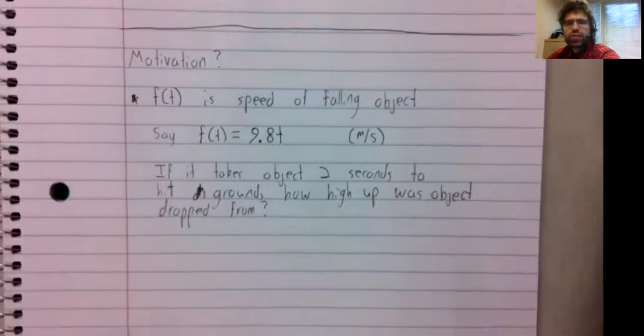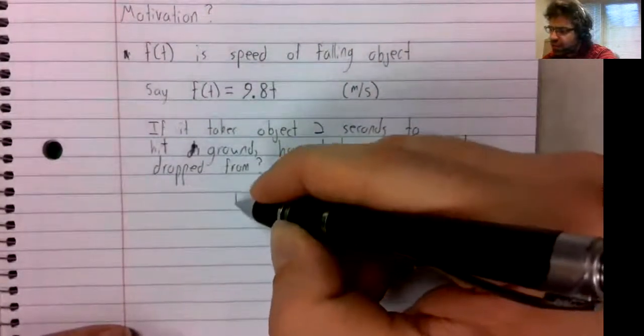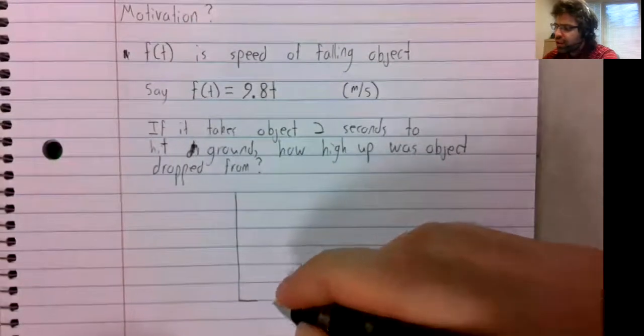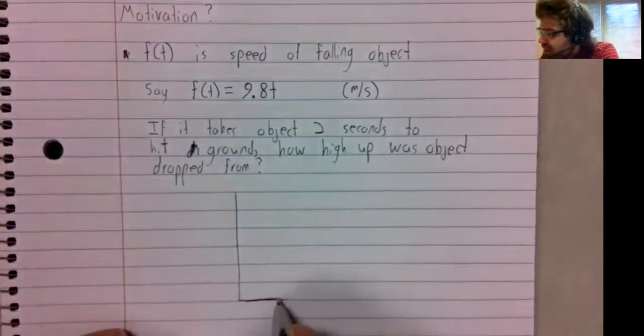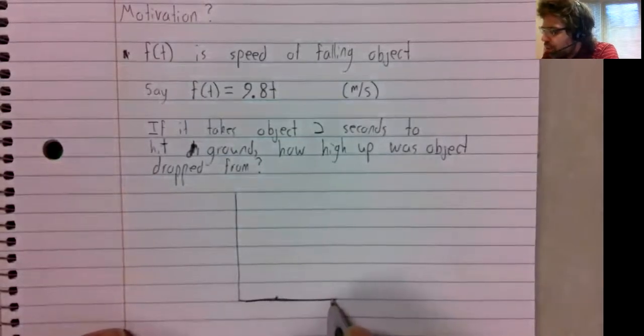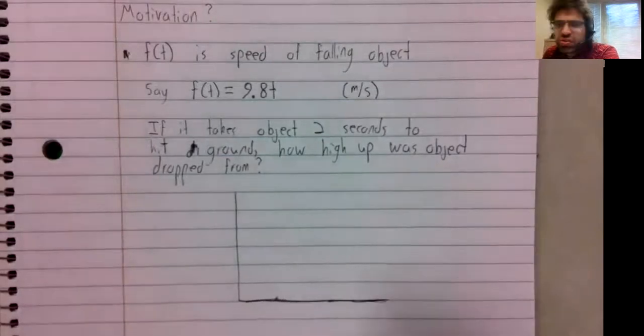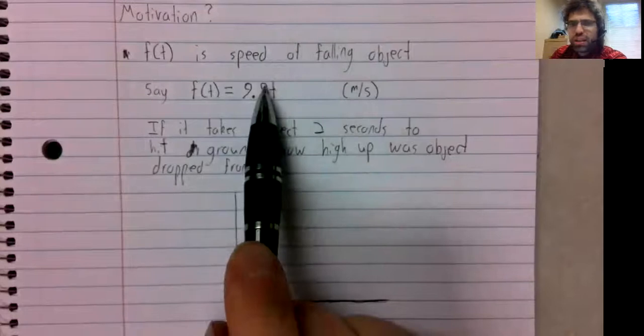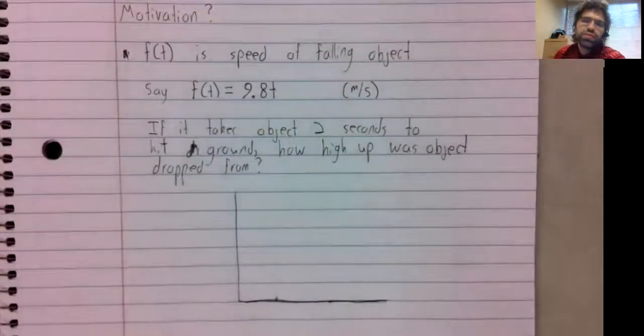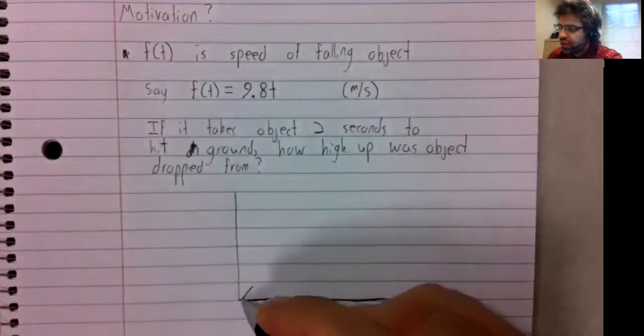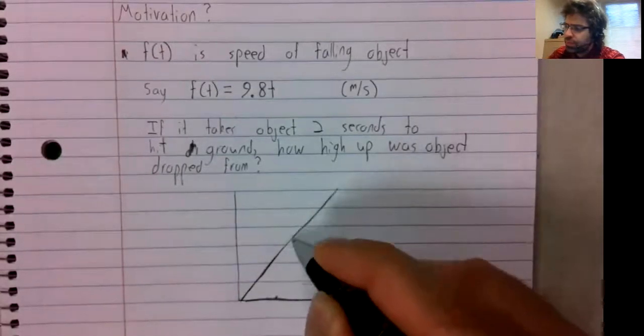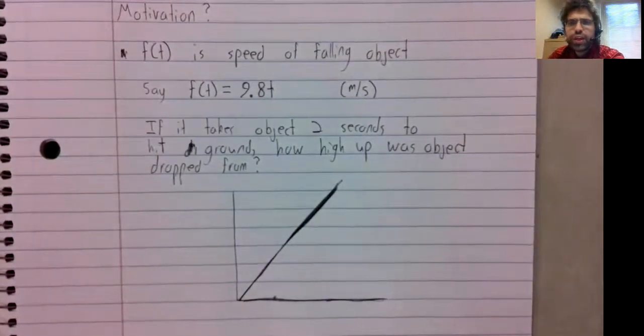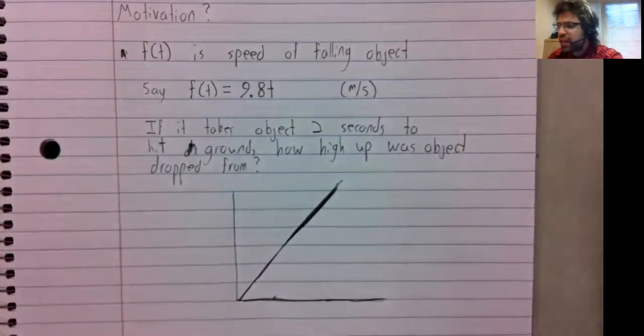How could we answer a question like this? It probably seems, and you're correct if you think this, that this is some kind of anti-derivative problem. Because velocity and speed are closely related, and we want to take information about speed and get information about position.